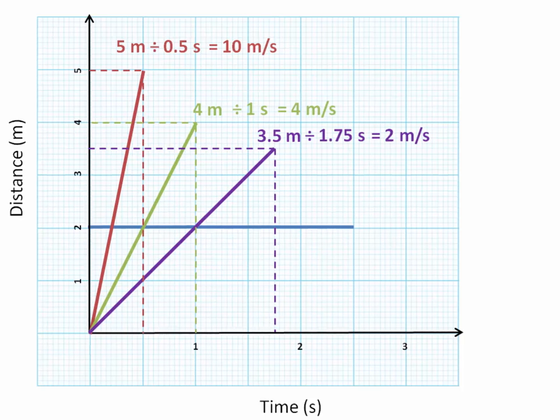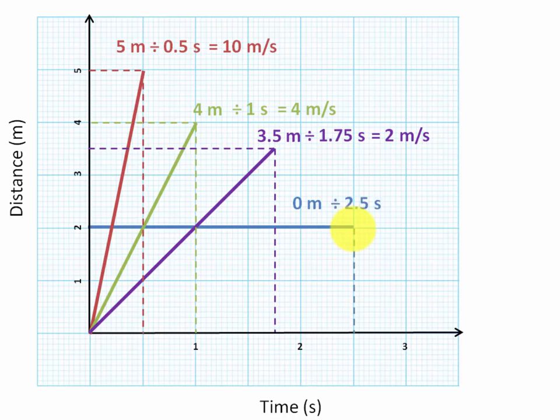And lastly, we've got the journey that's represented by the blue line, which can be trickier for some people, because the distance that's travelled is actually 0 metres. We can see at time equals 0, the person was standing at 2 metres, and then 2.5 seconds later, they're still standing at 2 metres. So the distance travelled is 0 metres, the time is 2.5 seconds. So their speed is 0 metres per second, which essentially just means that they're standing still.